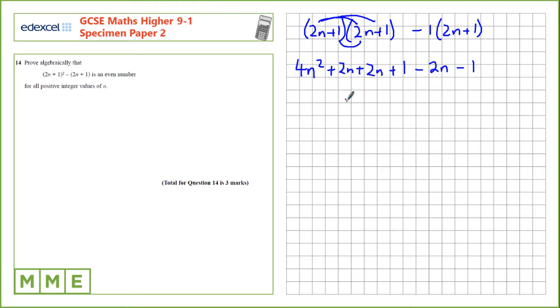Let's collect up terms here. We've got 4n squared and no other terms in n squared. We have 2n plus 2n take away 2n, which is just 2n, and 1 take away 1 is 0.